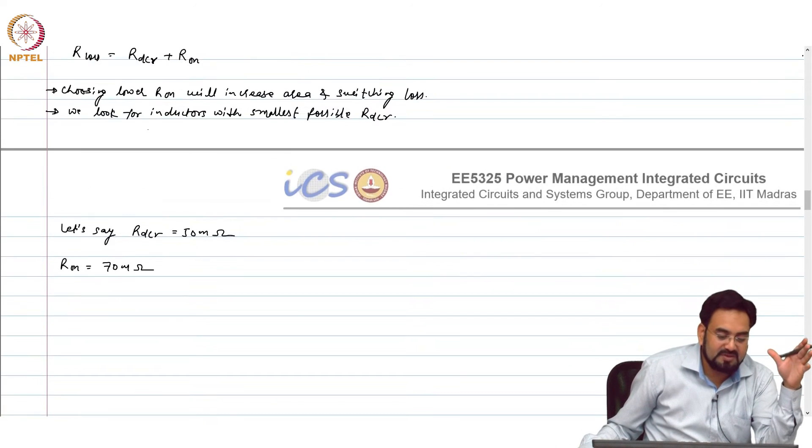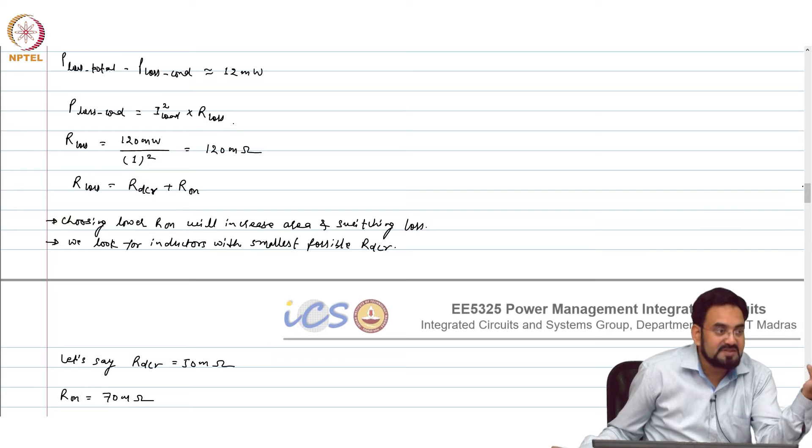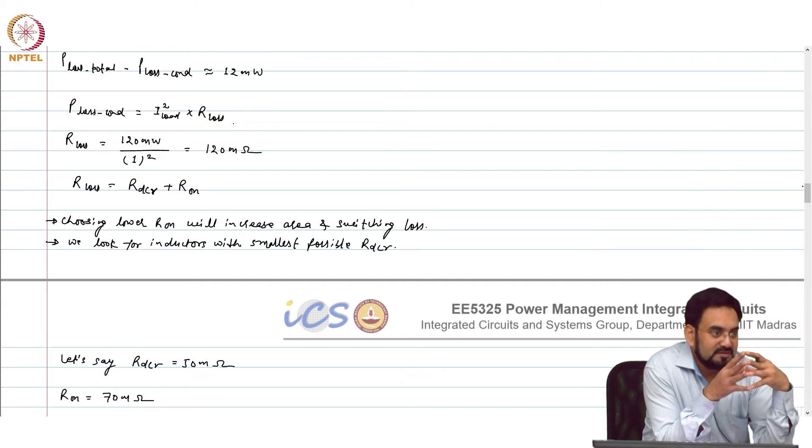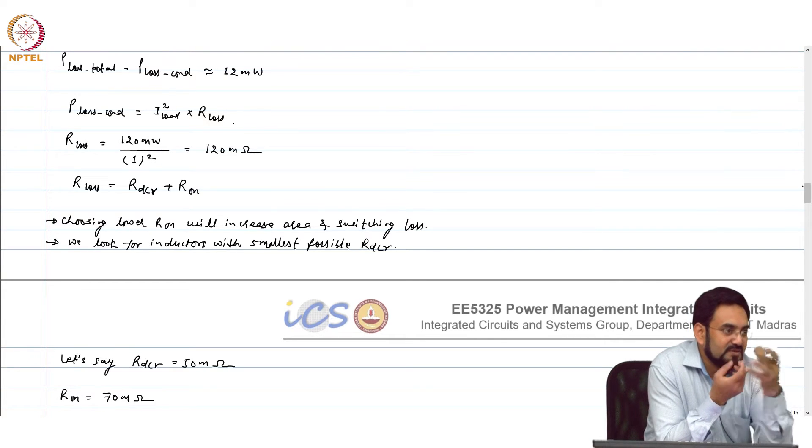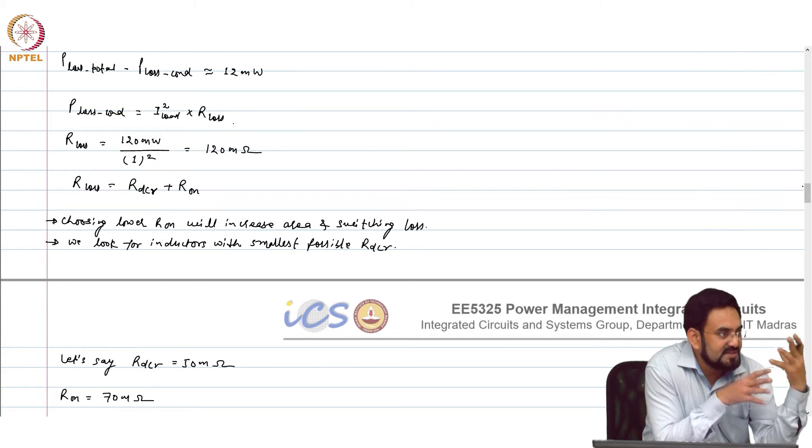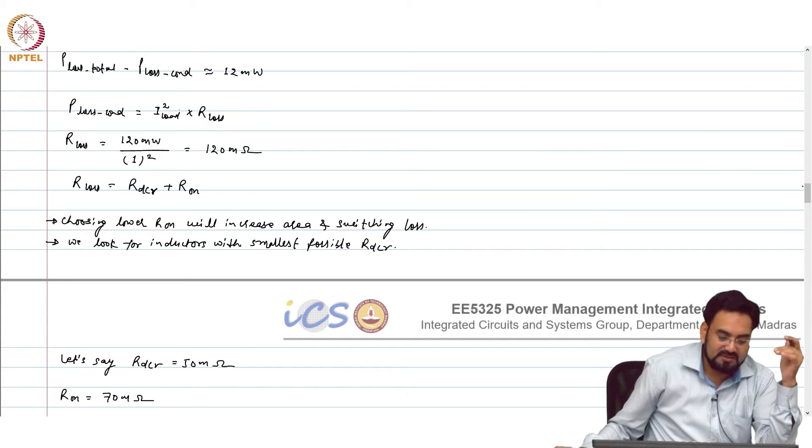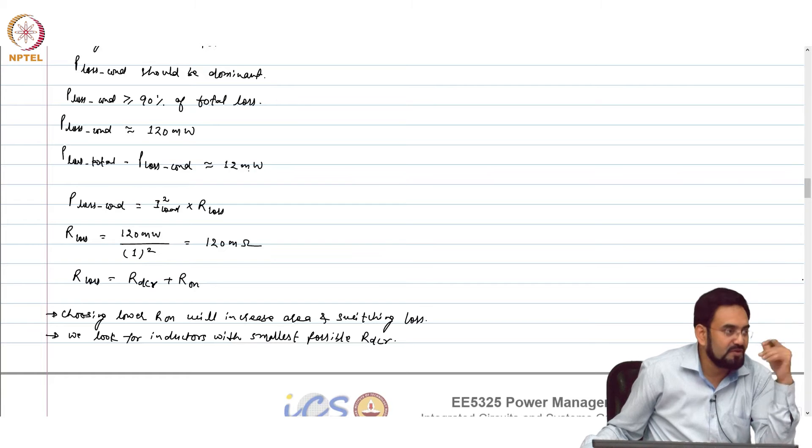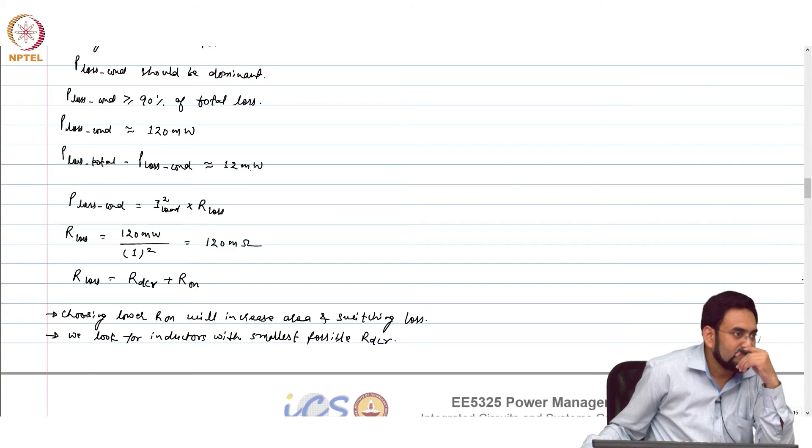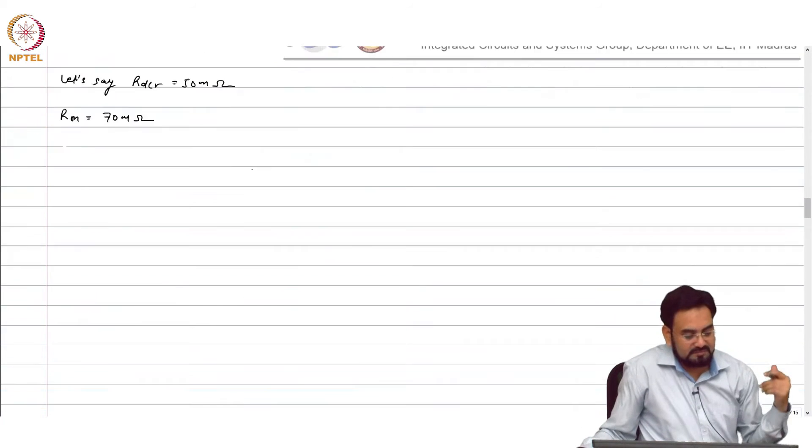But so far we have not calculated the losses. So for 70 milliohms, in order to know the switching loss and gate drive switching loss, first you have to size your power FET. Unless you size it you cannot find CV²f because C should be known, voltage is known. So once you know the C and then from there you can relate your switching frequency and capacitor.